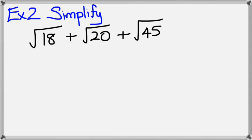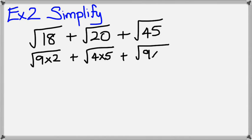Looking at another example, this time I want to simplify square root of 18 plus square root of 20 plus square root of 45. Again, I need to write them as a perfect square multiplied by a number. So 18 could be written as 9 times 2, 20 could be written as 4 times 5, and 45 could be written as 9 times 5.